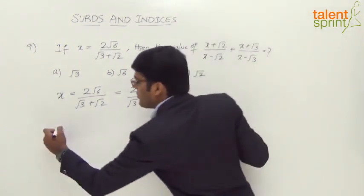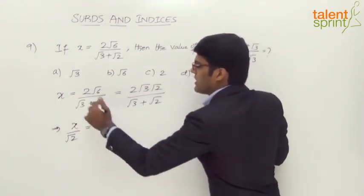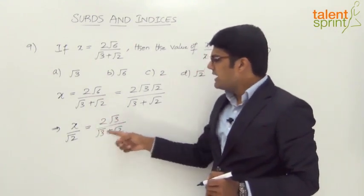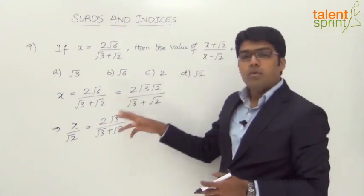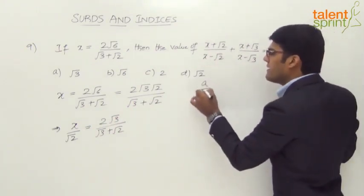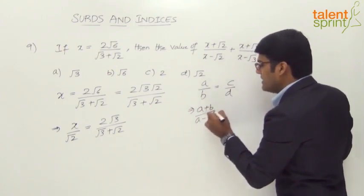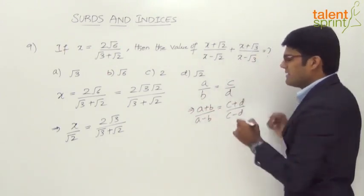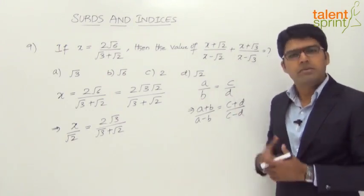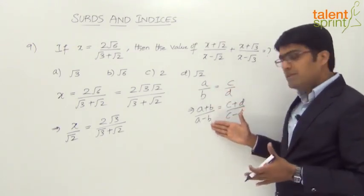Let's calculate x/√2. Taking √2 to the denominator gives x/√2 = 2√3/(√3 + √2). Now, according to componendo-dividendo: if a/b = c/d, then (a + b)/(a - b) = (c + d)/(c - d). This is a combination of componendo and dividendo. You can refer to the algebra video for these methods. So when x/√2 = 2√3/(√3 + √2), we can apply this rule.